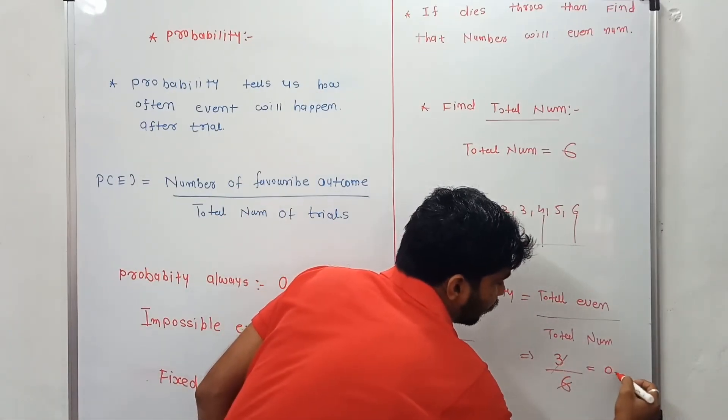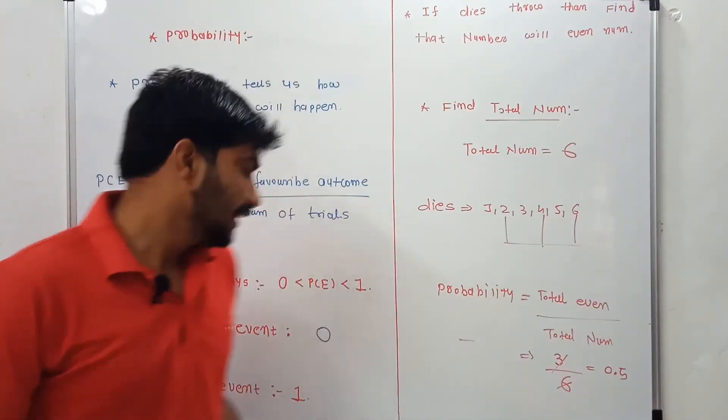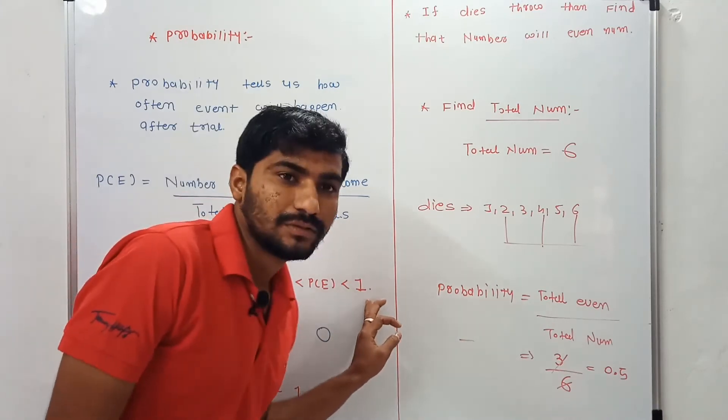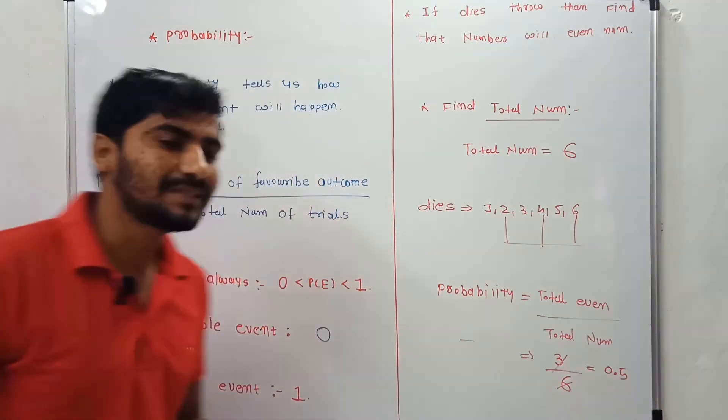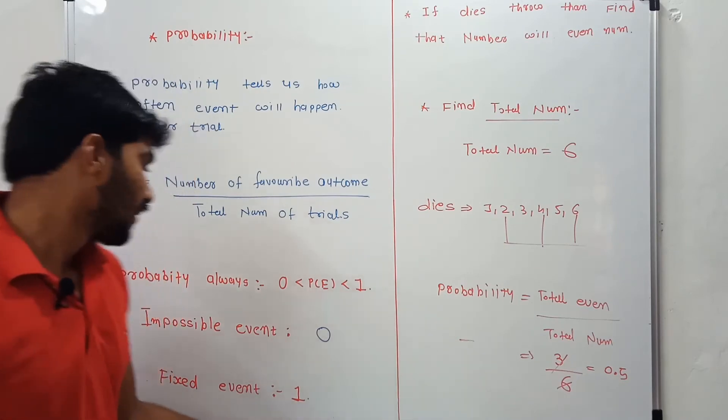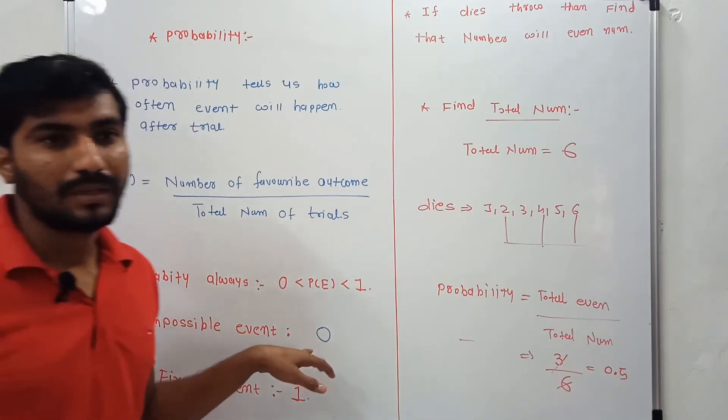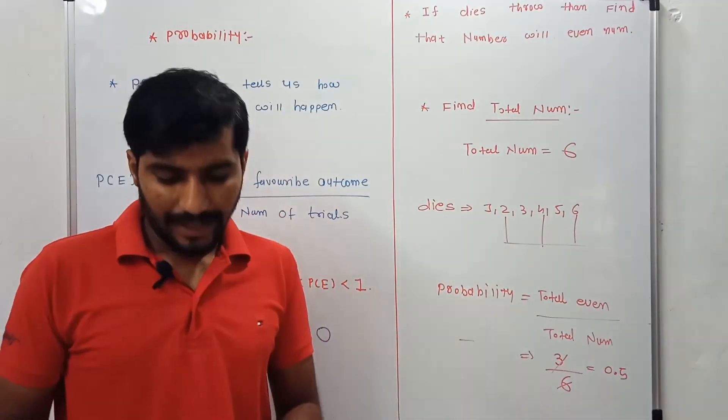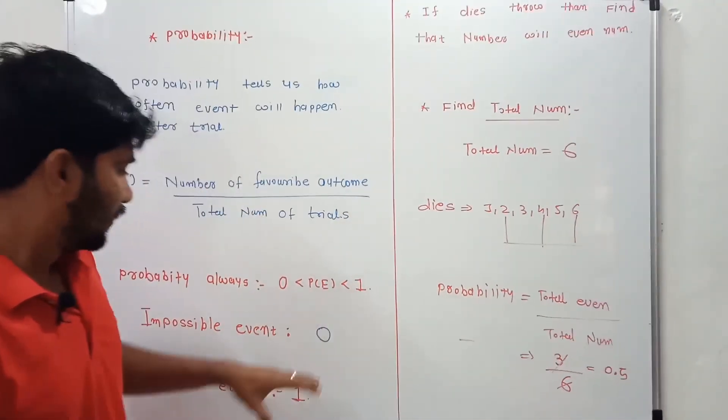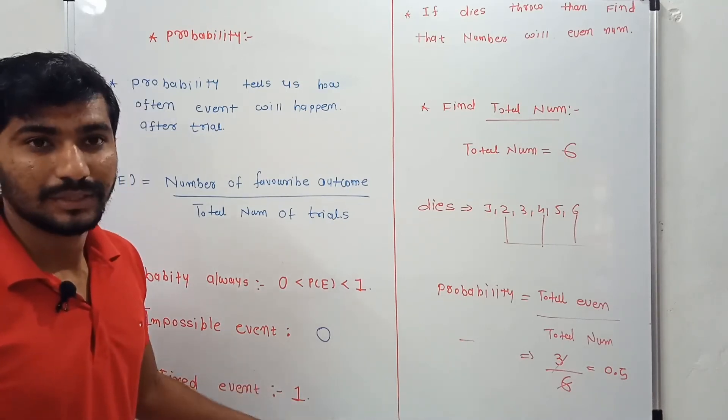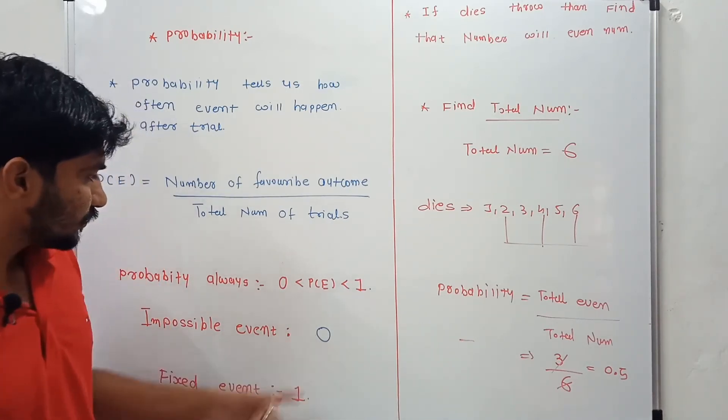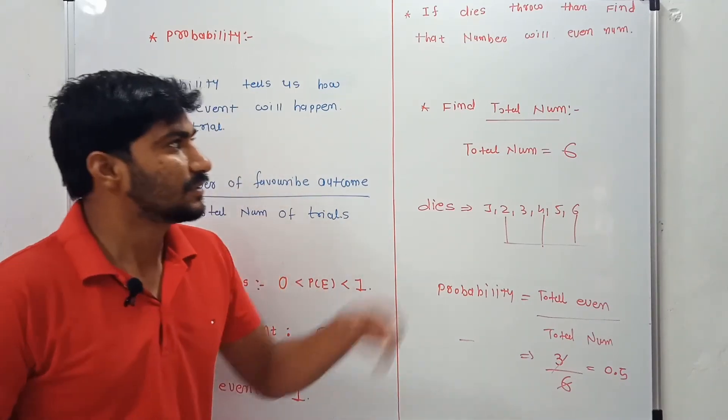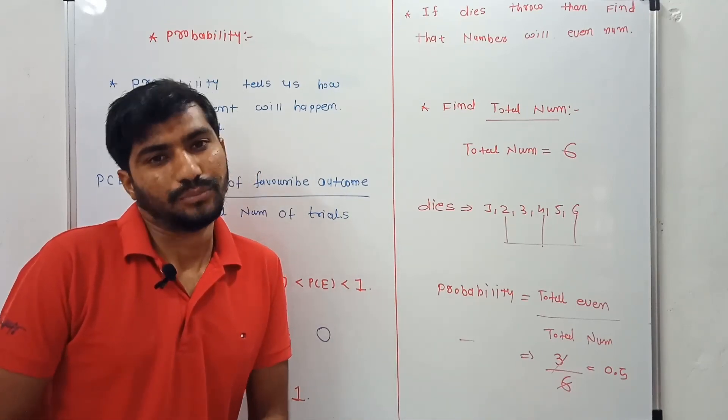What I am trying to say is for any probability the value will always be 0 to 1. For any finite fixed event the probability is always 1, and for any impossible event probability should be always 0. Please remind in your mind that this is valuable for any exam. So friends, next video we will study about detailed questions and examples based on probability.